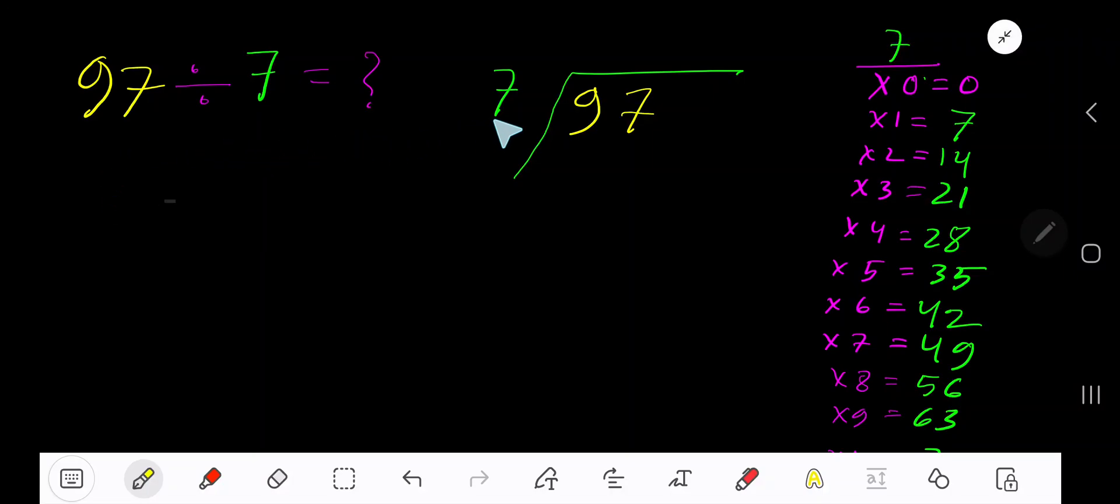97 divided by 7. Here 7 is the divisor, so we need the multiplication table of 7. 7 times 0 is 0, 7 times 1 is 7, 7 times 2 is 14, 7 times 3 is 21. To find the multiplication table of 7, just start with 7. Add 7 to the previous step: 0 plus 7 is 7, 7 plus 7 is 14, 14 plus 7 is 21.